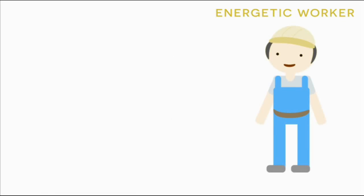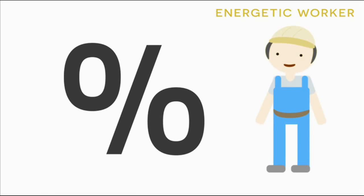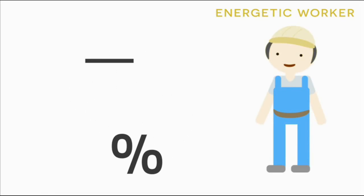So in order to solve this problem, let's first take a look at the percentage of the project that the energetic worker completes. So we can express this by using a fraction. In the numerator of a fraction, we're going to put the number four. And the reason why I put the number four is because together with the other worker, we know that it takes four days to complete the project.